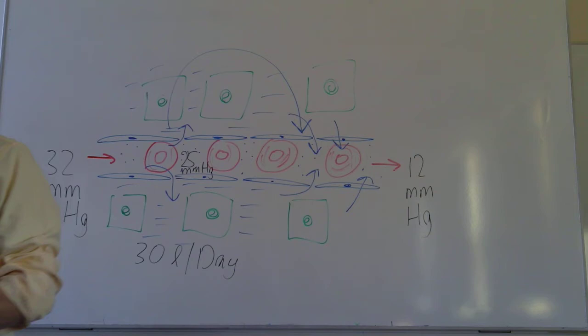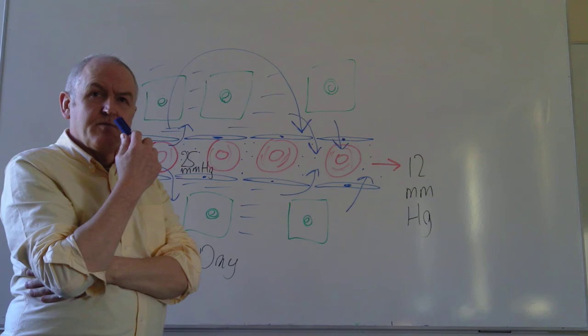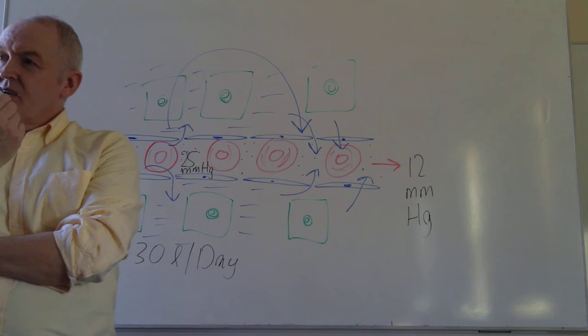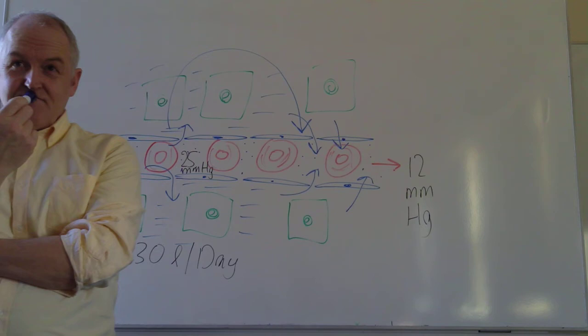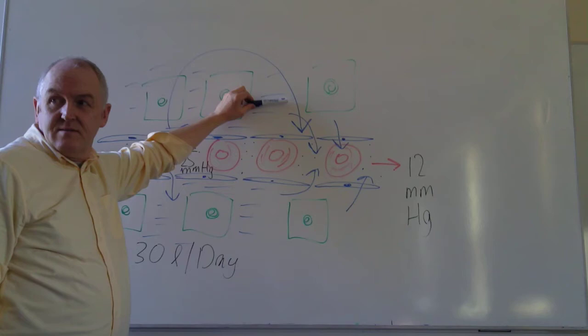All this physiology depends on the presence of the plasma proteins in the intravascular compartment. If there weren't plasma proteins in the blood, there'd be nothing to suck the water back into the capillaries. Without the plasma proteins we haven't got the osmotic suction effect. We have to have the plasma proteins inside the vessel, but we don't want them on the tissue side of the membrane.